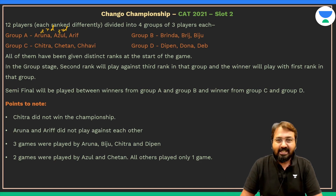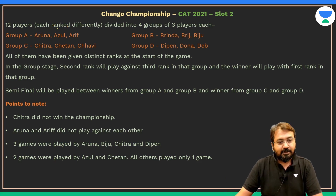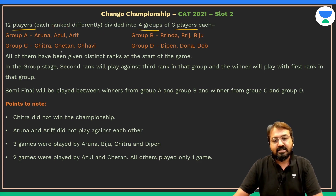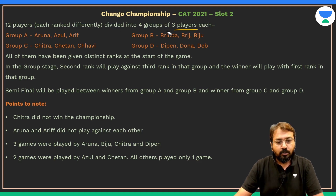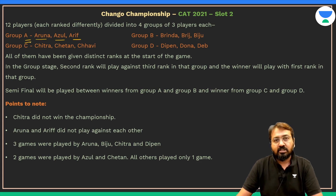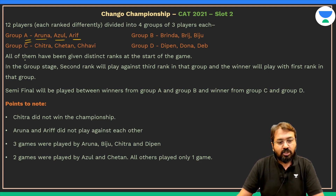The data is on your screen — quickly take a glance. There are 12 players, each ranked differently, divided into four groups with three players in each group. The group names and players are given, and it's easy to relate players to their group because the initials of the players align with the group name.